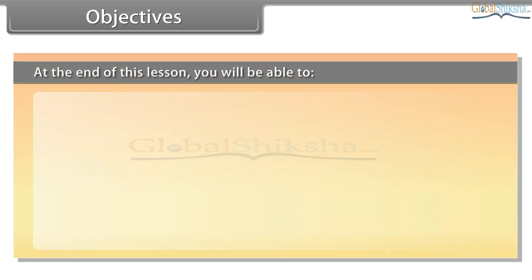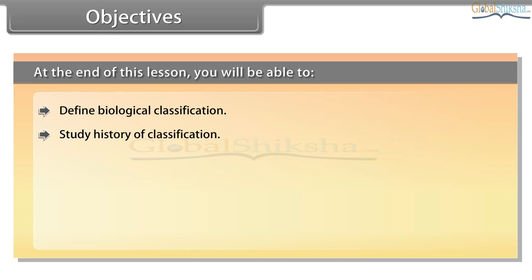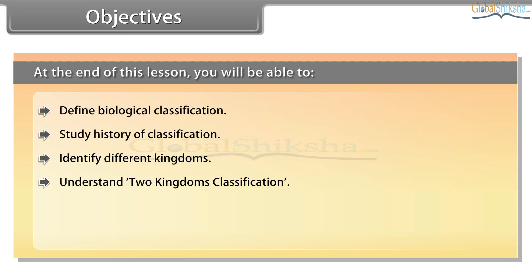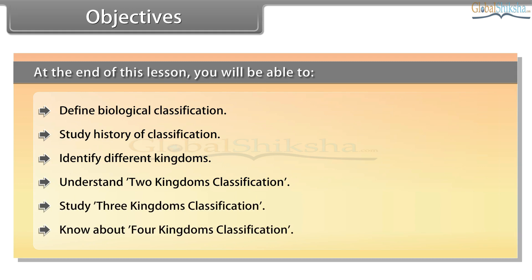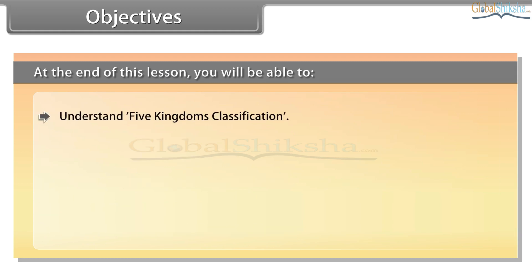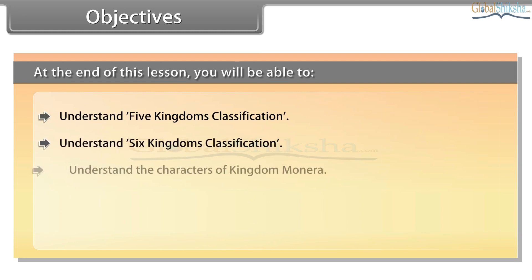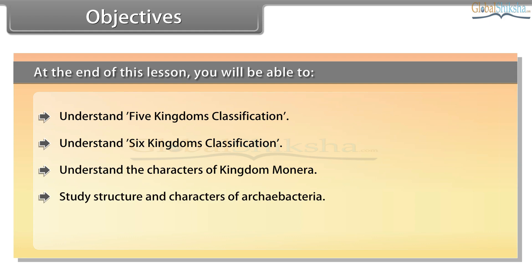At the end of this lesson, you will be able to: define biological classification, study history of classification, identify different kingdoms, understand two kingdoms classification, study three kingdoms classification, know about four kingdoms classification, understand five kingdoms classification, understand six kingdoms classification, and understand the characters of kingdom Monera, including structure and characters of eubacteria.